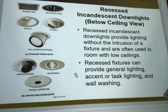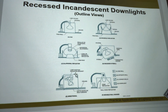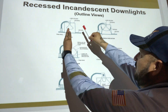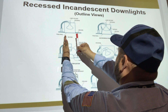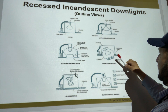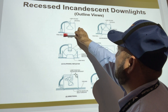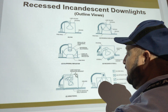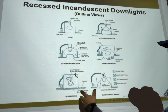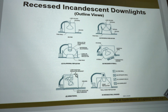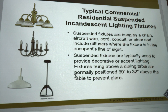Here's another example of the can light. The further back the lamp is, the more the light shrinks. The further out toward the front face of the fixture, the more it floods out the room. These are more like task lights for areas you want to enhance.